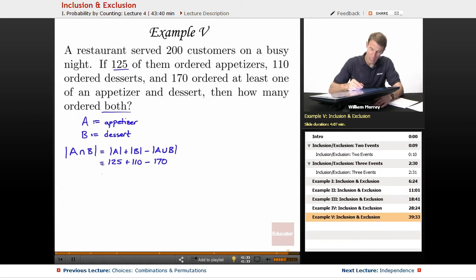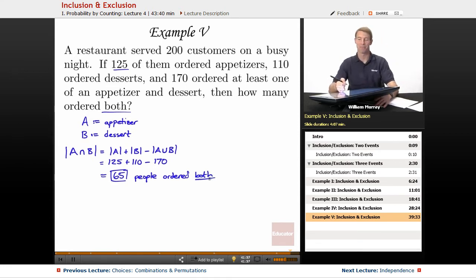And now, let's just do the arithmetic. We get 235 minus 170 is 65 people. So, we must have had 65 people ordering both an appetizer and dessert at this particular restaurant. Ordered both. That means they're in the intersection of A and B. They're in both A and B.